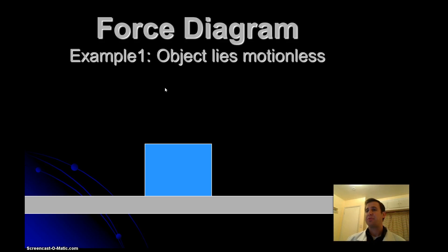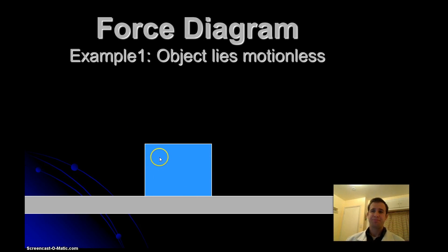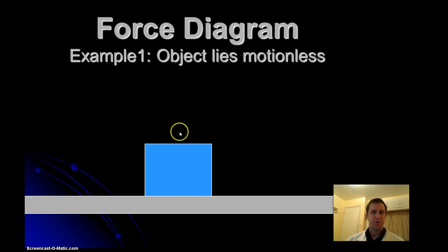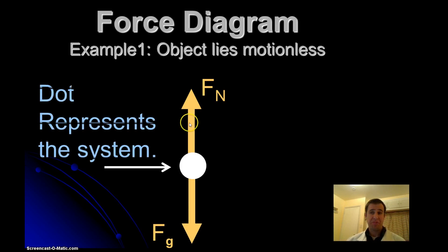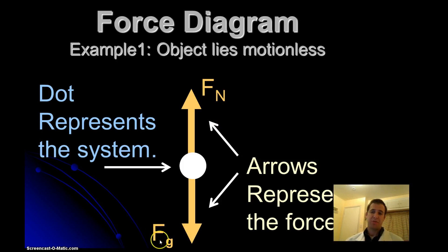Let's look at some examples. We have a block laying on a table and it's not moving. The block is our system. The forces acting on it are gravity pulling down and the surface pushing back up — otherwise the block would fall through. To draw the force diagram, we draw a dot representing our system, with arrows representing the forces. The top arrow is labeled the normal force, and the bottom arrow is labeled the gravitational force. That is the force diagram for a block sitting motionless on a table.